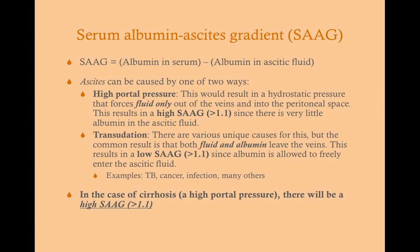When a patient has ascites, we want to know where it comes from. You can get ascites from portal hypertension, but you can also get ascites from cancer, infections, or tuberculosis. We can think of this as an exudate versus a transudate — like a pleural effusion. The way we determine the cause is the serum albumin ascites gradient, or SAAG: albumin concentration in the serum minus albumin concentration in the ascitic fluid. This helps determine what class of causes is responsible.